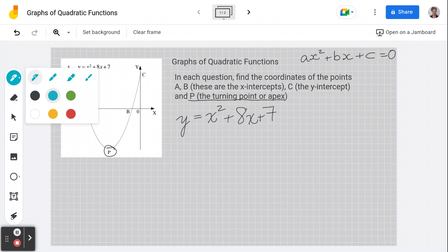So any value, any number before x squared is actually called a. Okay, any value before your x term, the single x, we call this b. And any value here is c.